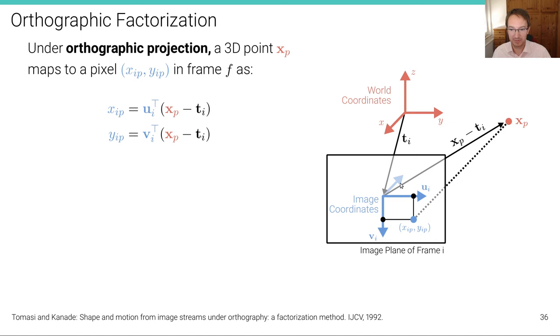This is basically leading to this vector here, xp minus ti, this point here now expressed in these blue camera coordinates. And then we simply need to project that point onto the axis of that coordinate system to get the x and y pixel location. So here's an illustration where we are projecting it onto that plane by taking the projection onto that vector and onto that vector. And this gives us the x and the y coordinate for that point p in the image plane of frame i.